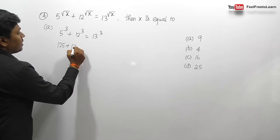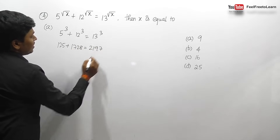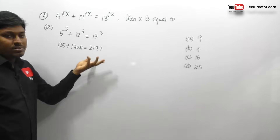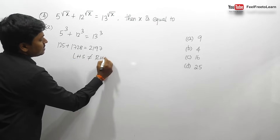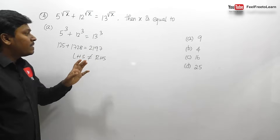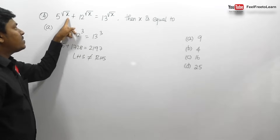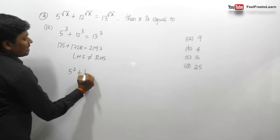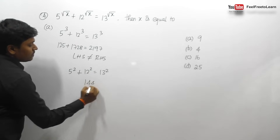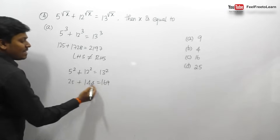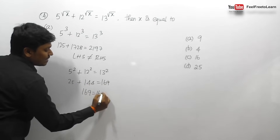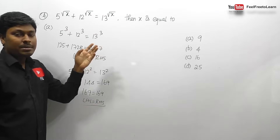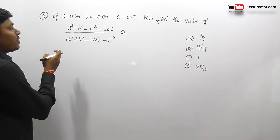5³ + 12³ gives 125 + 1728, which does not equal 13³ = 2197, so option A is eliminated. Trying option B (x=4): √4 equals 2, giving 5² + 12² equals 13², that is 25 + 144 equals 169. Since 169 equals 169, LHS equals RHS. The answer for question number 4 is option B, x equals 4.